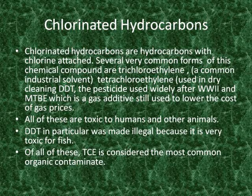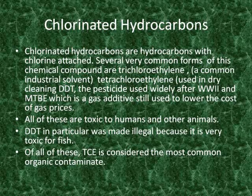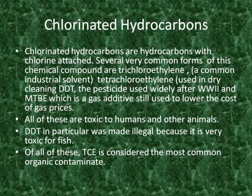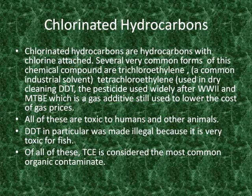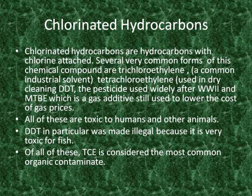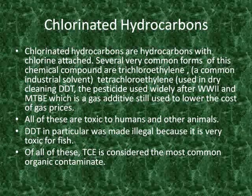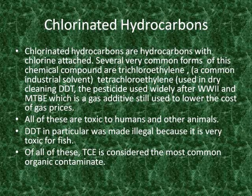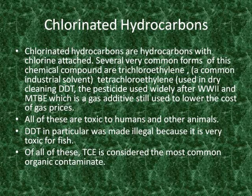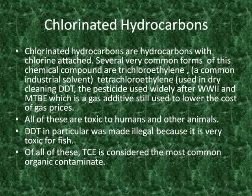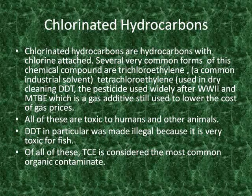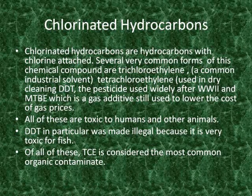Chlorinated hydrocarbons are simply hydrocarbons with at least one covalently bonded chlorine atom. Several very common forms are trichloroethylene, tetrachloroethylene, DDT — which was a very common pesticide in the 60s and 70s — and MTBE, which is still being used today as a gas additive. All of these are very toxic to people. Of all of these, TCE is still considered the most common organic contaminant in the country.